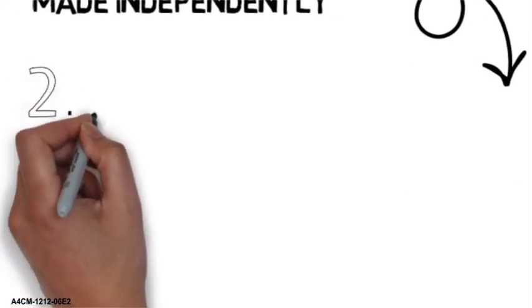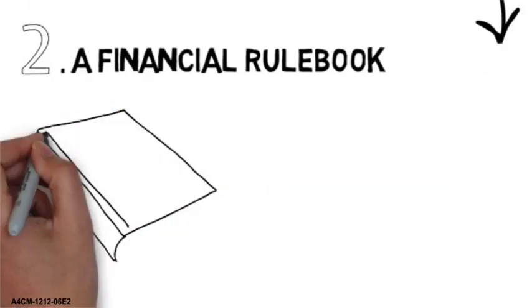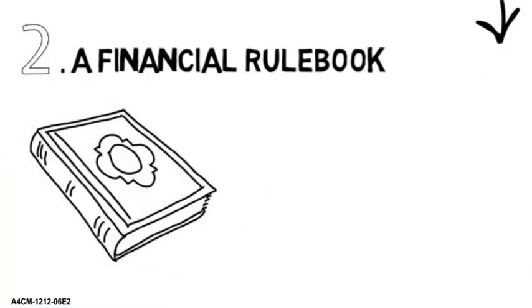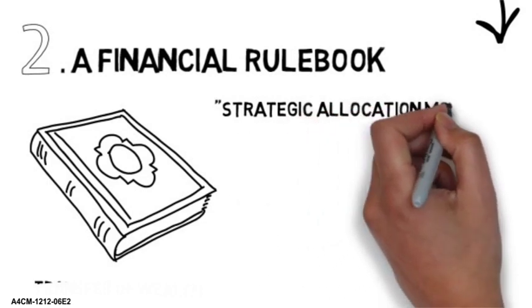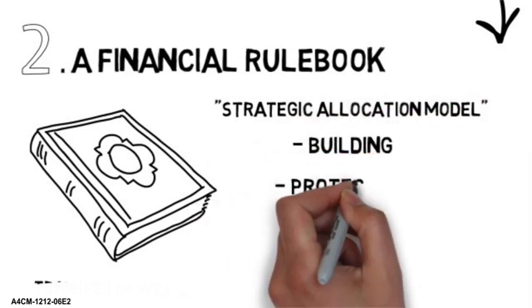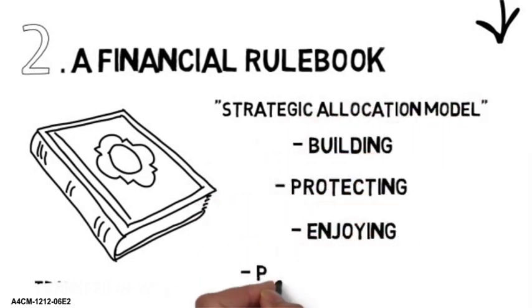The second thing you'll need is a financial rulebook. A financial rulebook will teach you how to make financial decisions and to avoid the transfer of wealth problem, but we'll get back to the transfer of wealth problem later on. We use the strategic allocation model, which covers the rules for building, protecting, enjoying, and passing on your wealth.